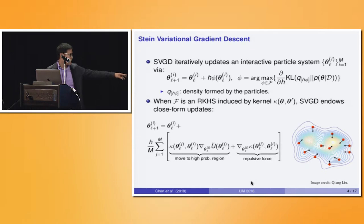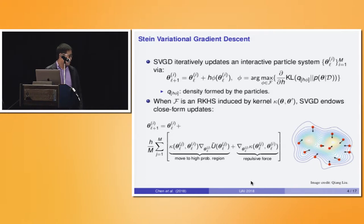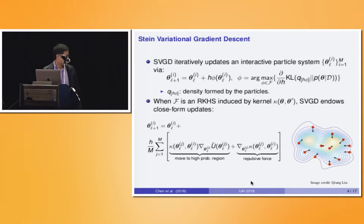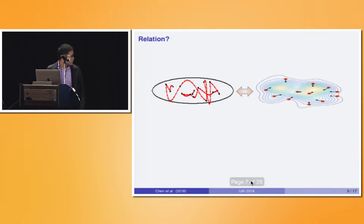The phi function essentially has two terms. One is a kernel-weighted combination of the log posterior gradient — this term makes the particles focus on high-density regions. The other term is the gradient of the kernel function, called a repulsive force, which has the effect of making the particles stay far away from each other.